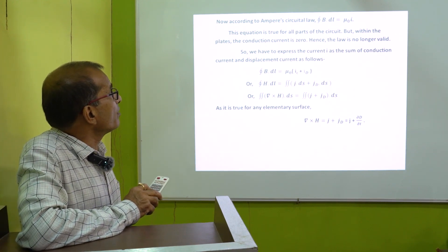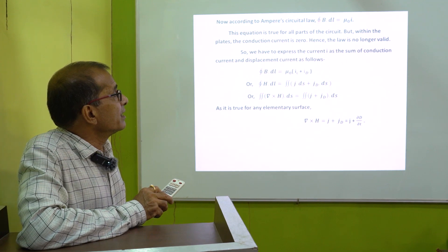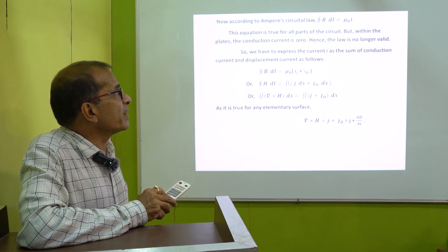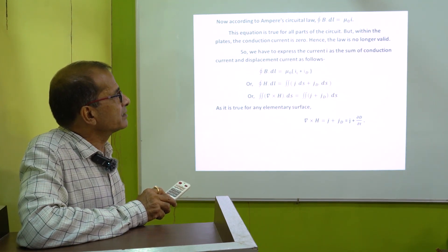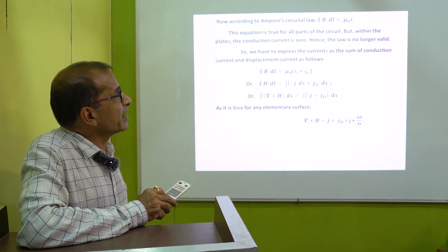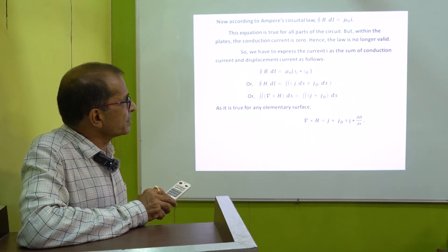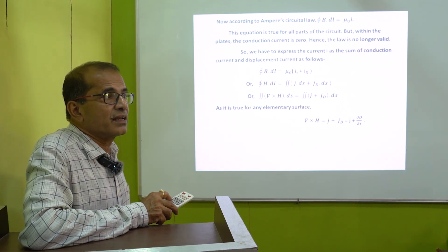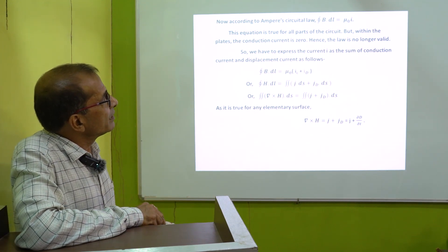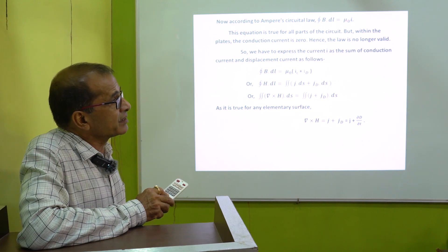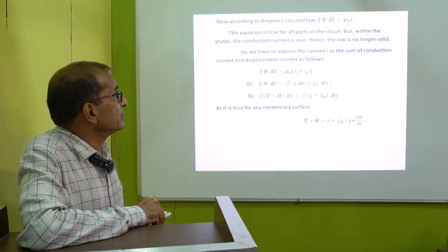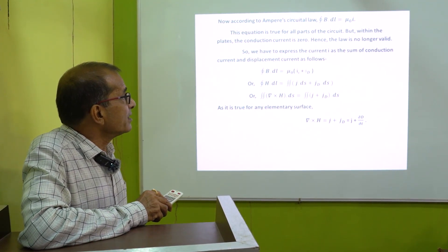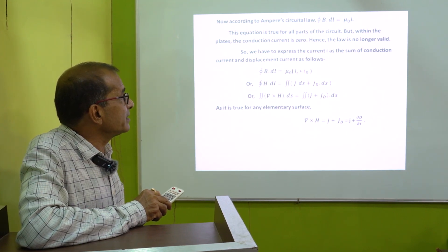Now we shall recall Ampere's circuital law: ∮H·dL equal to μ₀I. It is true but only partially — it is true only for the conduction current. When there is a displacement current, it should be modified. As seen in the previous discussion with the capacitor, this law needs to account for displacement current. We change the right-hand side so that the current I is the combination of two currents: conduction current Ic and displacement current Id.